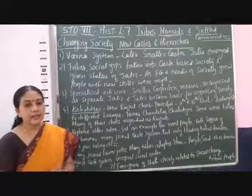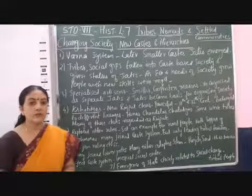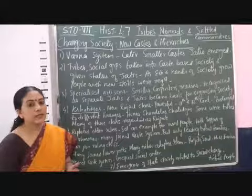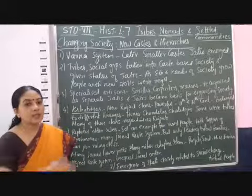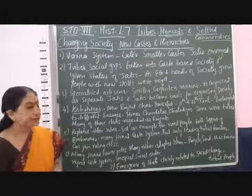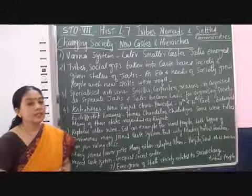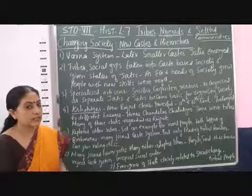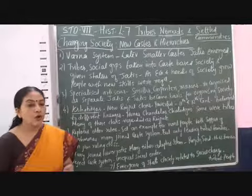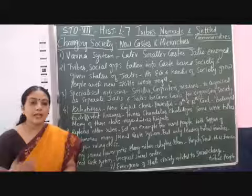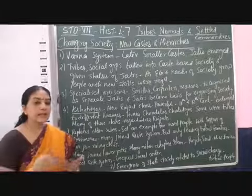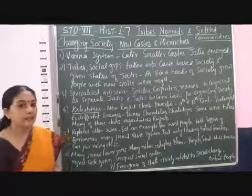In the medieval period, the whole society was divided into four castes, which is also called the Varna system. Many smaller castes also started joining this Varna system, and so many new Jatis emerged. These were the tribal people and many other social groups which were not following a caste-based society previously, but now they started entering the Varna system.